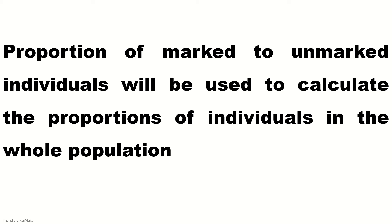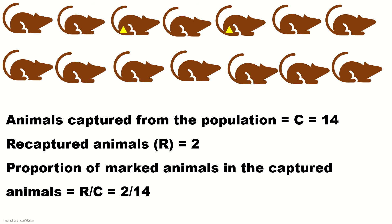These marked individuals will be released back into the population and given ample time to mix with the entire population. The proportion of marked to unmarked individuals will be used to calculate the proportions of individuals in the whole population. A group of individuals are then recaptured from the population. The number of individuals in the recaptured group is more than that in the initial captured group. Initially in this example M was 12, so 12 animals were captured and marked.